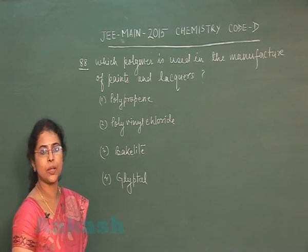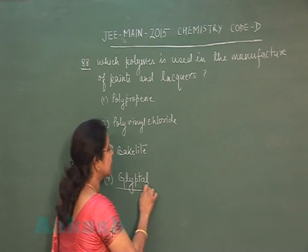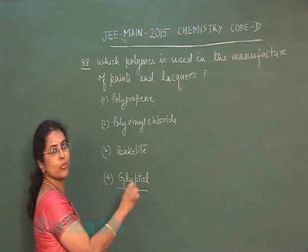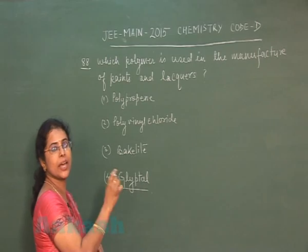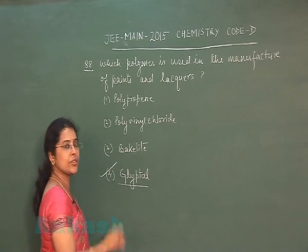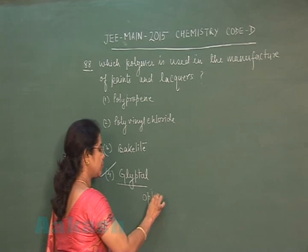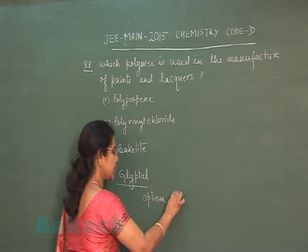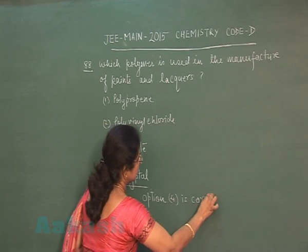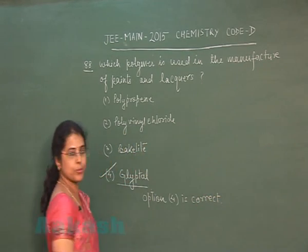The fourth option is glyptal and this glyptal is used in manufacturing of paints and lacquer. So correct answer is glyptal. It means option number four is correct option.